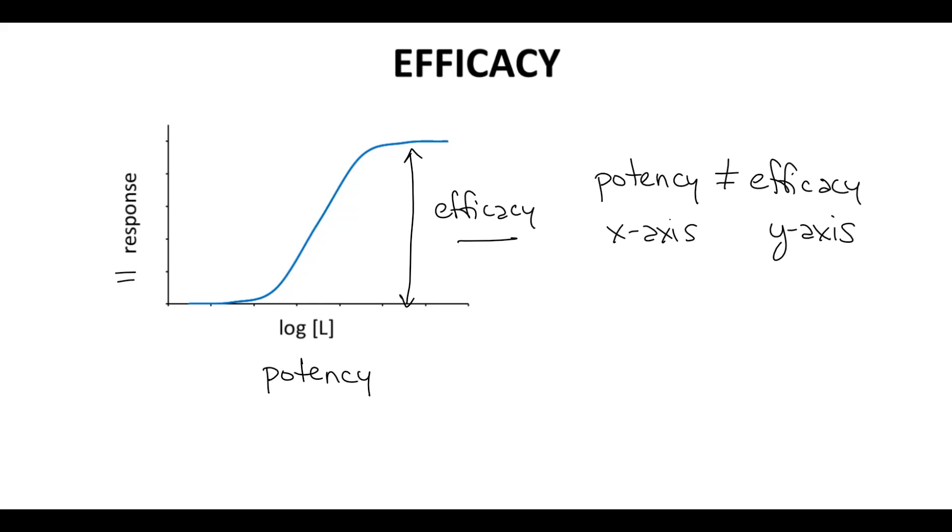Efficacy for an agonist means the molecule is turning on a receptor pathway. The goal of the molecule, however, is to treat a disease. Just because a molecule shows high efficacy and high potency does not mean the molecule will be effective in treating a disease. This is an important idea.